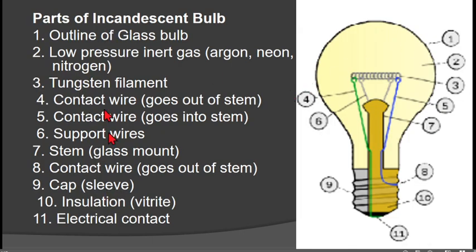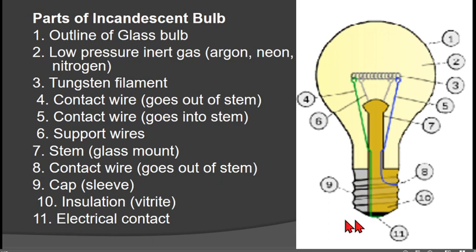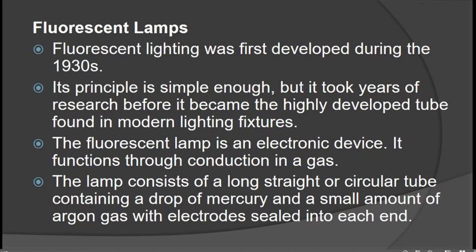These are the parts of the incandescent lamp: the glass bulb, the low-pressure inert gases, the tungsten filament, the contact wire, the support wires, the stem, the contact wire cup, the insulation material, and the electrical contact.